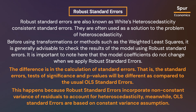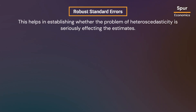This happens because robust standard errors incorporate non-constant variance of residuals to account for heteroscedasticity, whereas OLS standard errors are based on the constant variance assumption. This helps in establishing whether the problem of heteroscedasticity is seriously affecting the estimates.